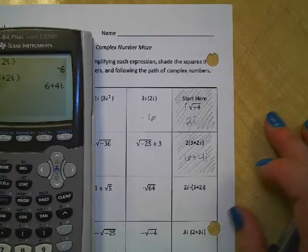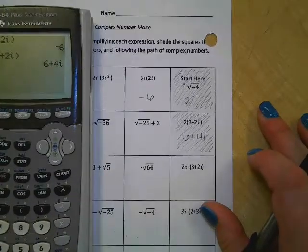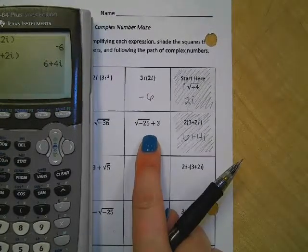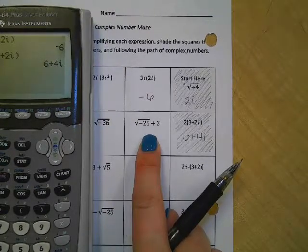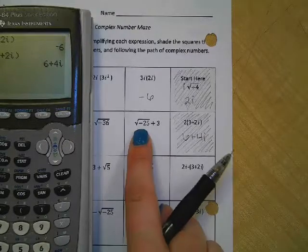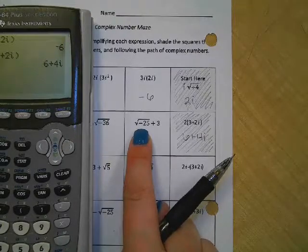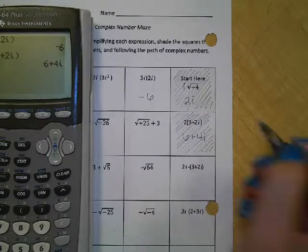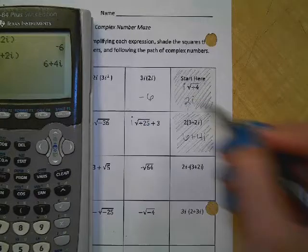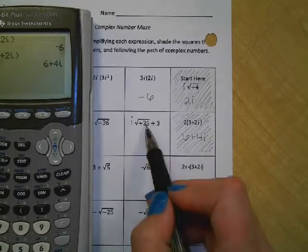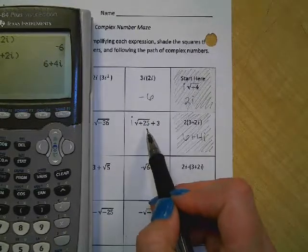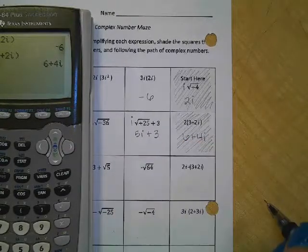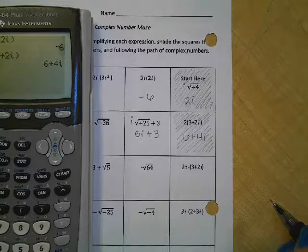Okay, and now I can go to the left or I can go down. What happens if we go to the left? What do I do with that negative in front of the 25? I make it positive, and I put the i in the front. What's the square root of 25? 5. So I have 5i plus 3. Is that how we're supposed to write complex numbers?